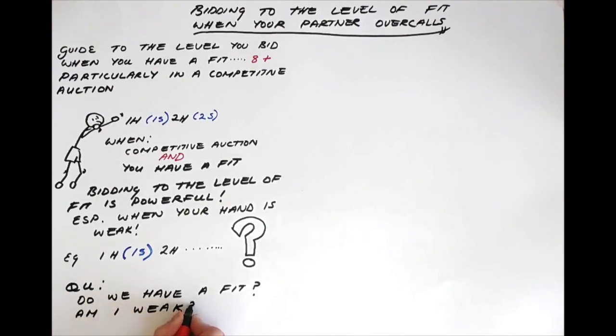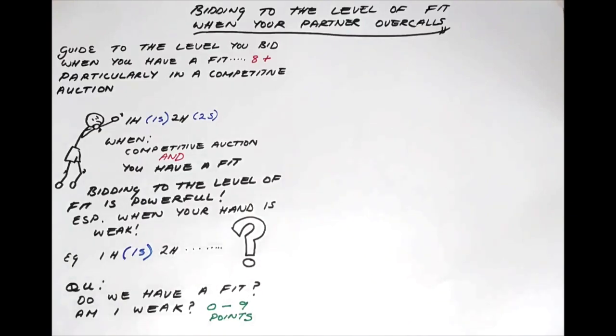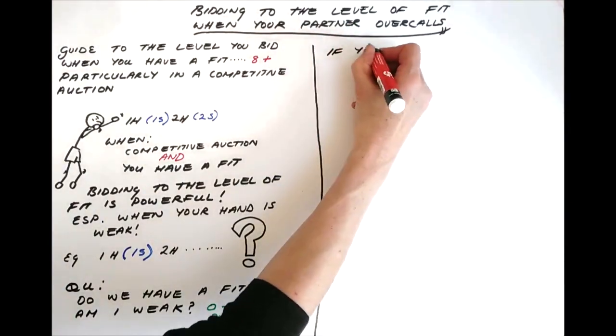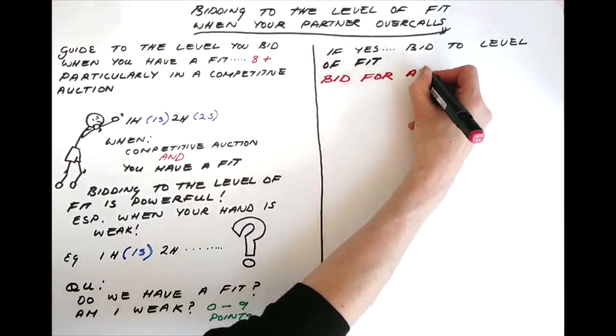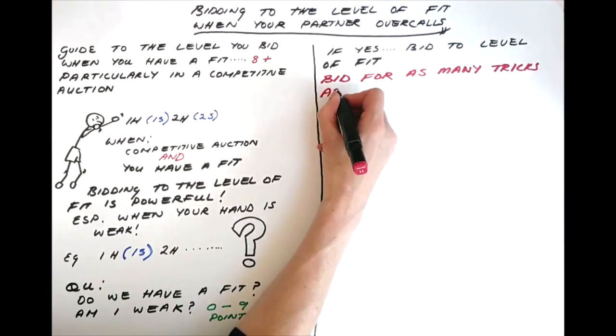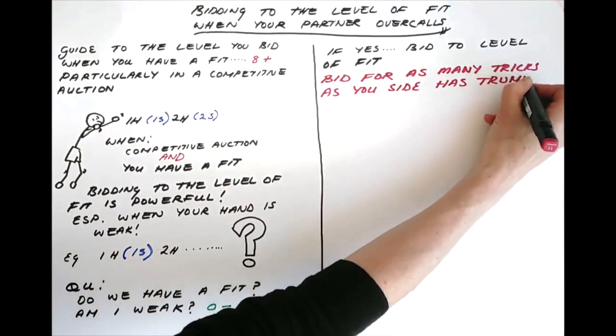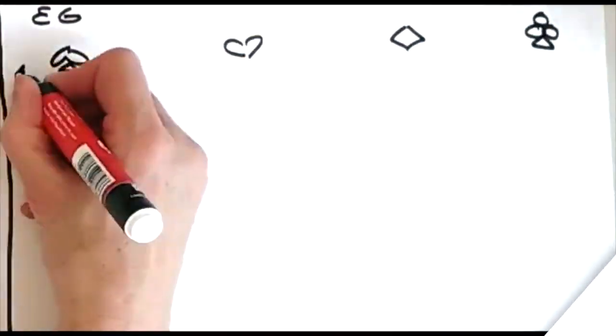And a weak hand in this kind of context means between zero and nine points. If you answer yes to these questions, then you should bid to the level of fit. This means bid for as many tricks as your side has in trumps. Here are some examples to demonstrate.